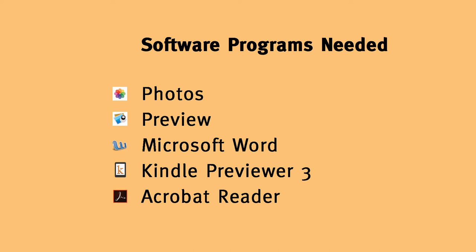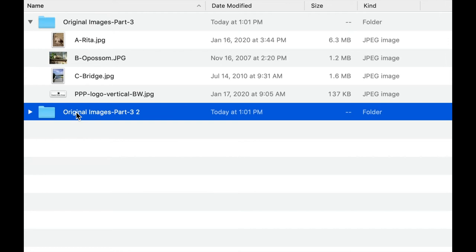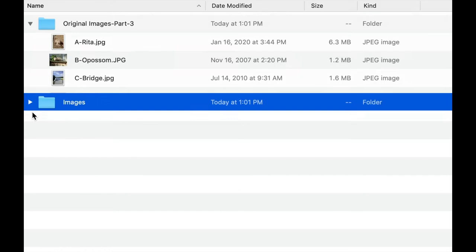We are going to use five programs for this tutorial. Photos and Preview, which come free with a Mac, are used to manipulate the images. For a PC, check the list in the comments section below. I'm assuming you already own Microsoft Word. You can download Kindle Previewer 3 from the Amazon KDP site to check how your book looks as an e-book, and use the free Acrobat Reader from Adobe to check the print version. It's very difficult to go backwards once you start manipulating photos, so don't manipulate your originals — make a backup folder and manipulate a new set of images.